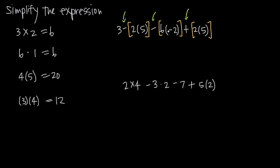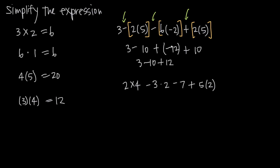We'll leave our addition and subtraction signs and do those operations next. So we're going to have 3 minus — 2 times 5 is 10. We keep our subtraction sign; 6 times a negative 2 is negative 12. We put parentheses around it to keep that negative sign separate from the subtraction sign we left in between. Then we have plus — 2 times 5 is 10. Now we have minus a negative 12, which is the same as plus 12, so the two negative signs cancel and become a positive.